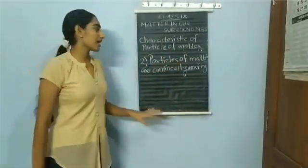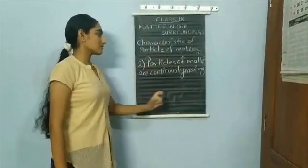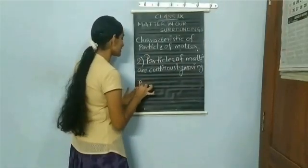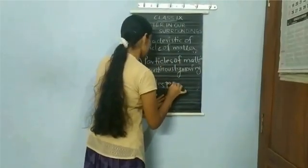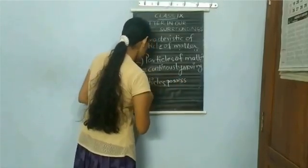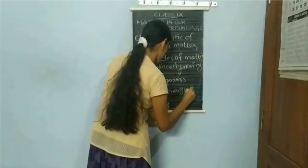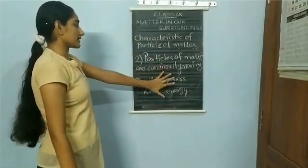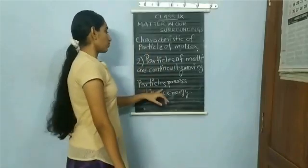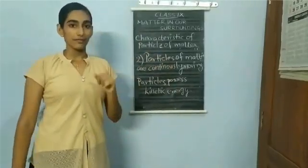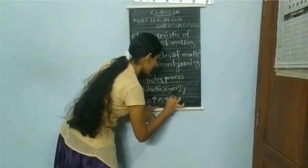Since the particles of matter are continuously moving, we can say that the particles possess kinetic energy — otherwise they would not be able to move. The kinetic energy will increase when the temperature increases. So as the temperature increases, the particles also move faster, meaning the kinetic energy of the particles increases with temperature.